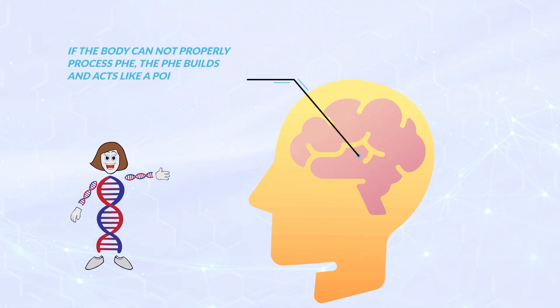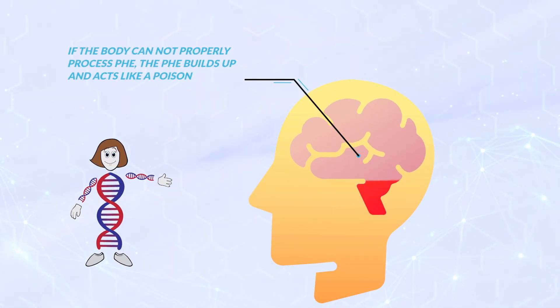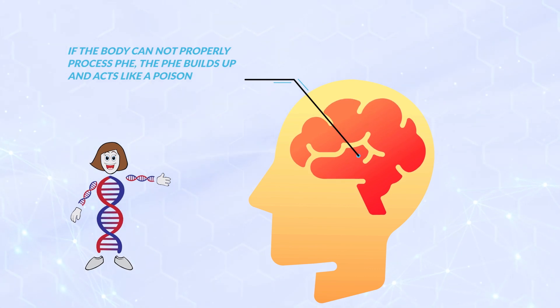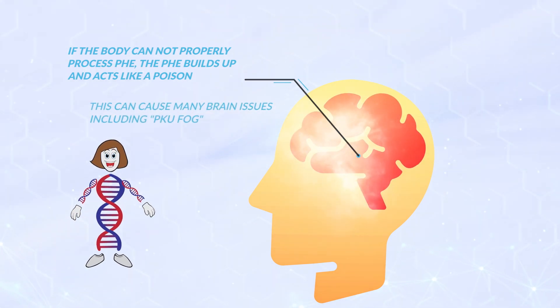If the body cannot properly process Phe, the Phe builds up and acts like a poison that can cause a number of brain problems, including PKU fog.